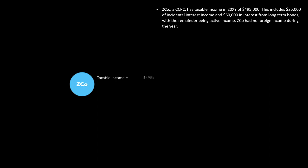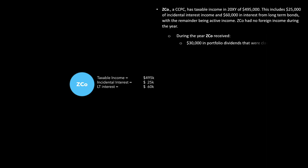Here we'll draw ZEDCO. They have taxable income, incidental interest income, and long-term interest income. During the year, ZEDCO received a few amounts. $30,000 in portfolio dividends that were classified as eligible — I'll use a yellow line to indicate eligible dividends, and a broken or dashed line to indicate they are not connected. This is a portfolio dividend.